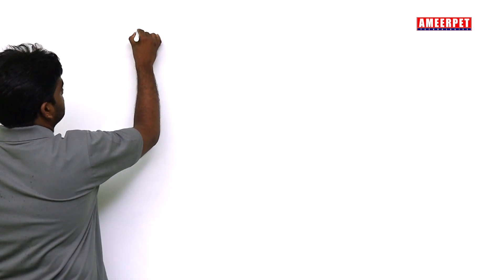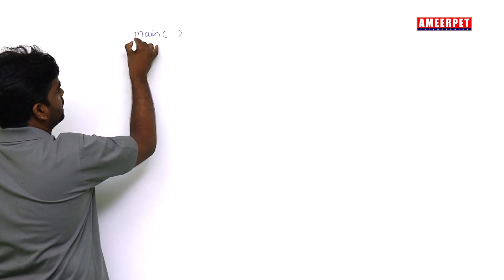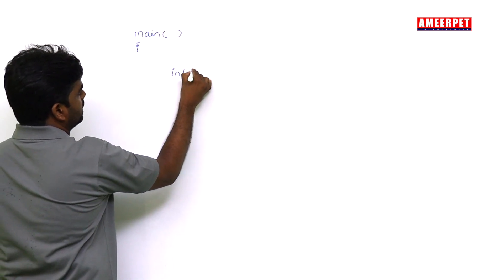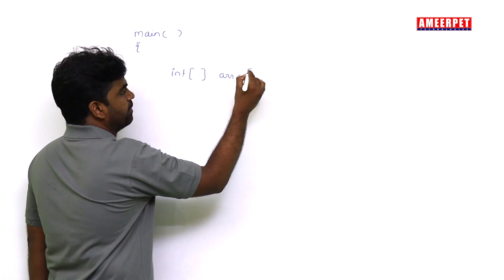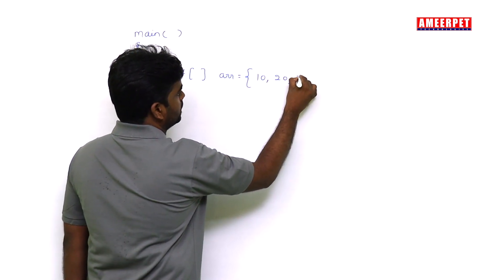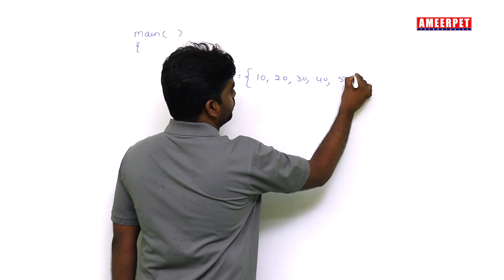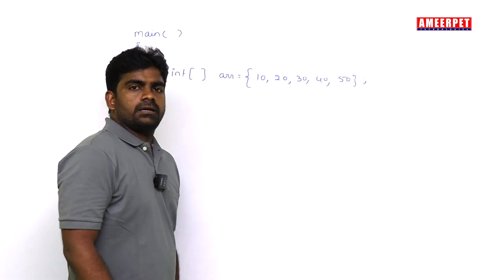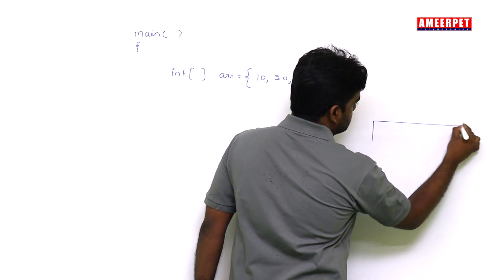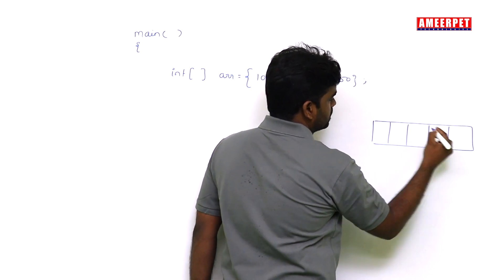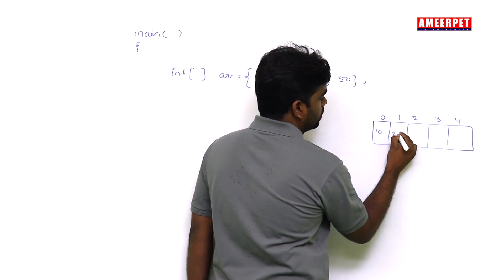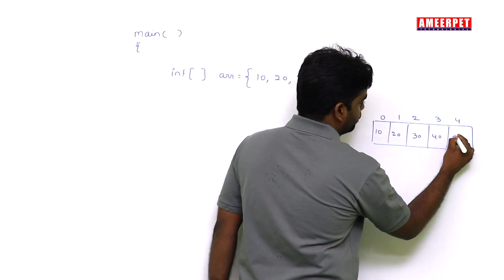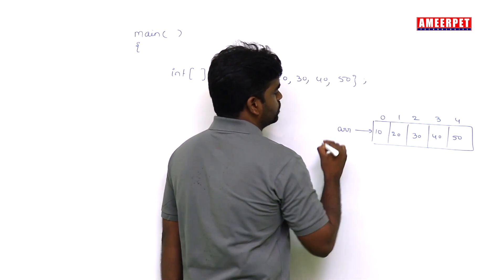We already discussed in the last session how to create an array in Java. I'm taking an integer array arr with some values: 10, 20, 30, 40, 50. This is the memory allocation process and index we already discussed, starting with zero. The array is pointing to this location.